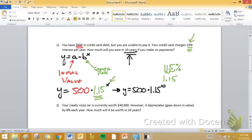So we have 500 times 1.15 to the 10th. And I'm just going over here to my calculator. That's going to be about $2,023 roughly.